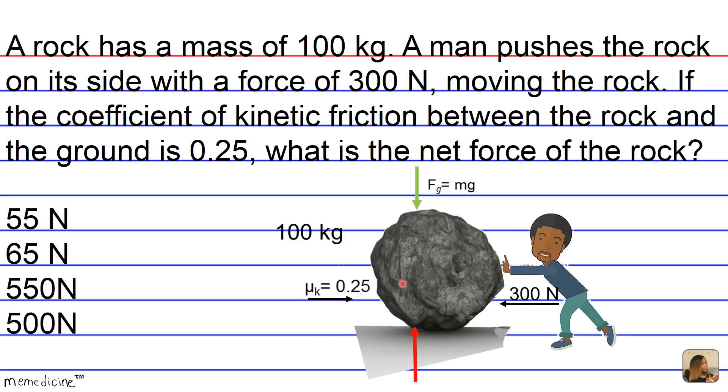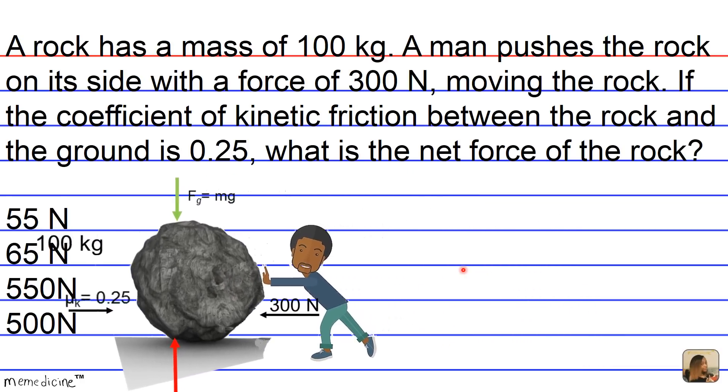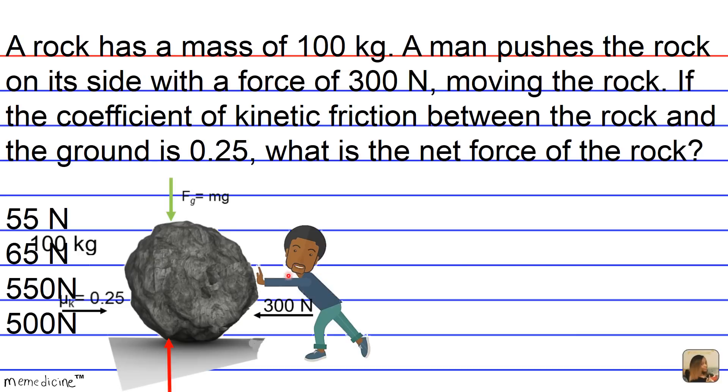The gravitational force and the normal force negate each other in the vertical direction. Therefore, the net force will be in the horizontal direction. In the horizontal direction, the force of the push from the man works against the force of friction since the rock moves. So the force of the man's push overcomes friction in the direction of the overall net force.